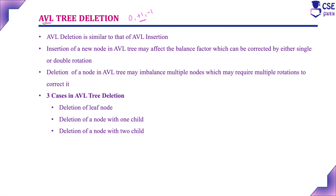In an AVL tree, if during insertion or deletion the tree becomes unbalanced, we need to apply a rotation to convert the unbalanced binary search tree into a balanced one. There are four types of rotations: single left rotation, single right rotation, double left-right rotation, and double right-left rotation. Whichever rotation is required, we apply it accordingly to convert the unbalanced tree into a balanced one.